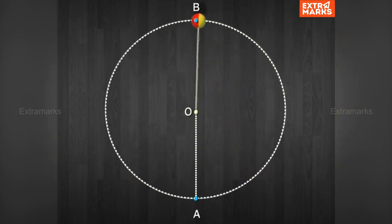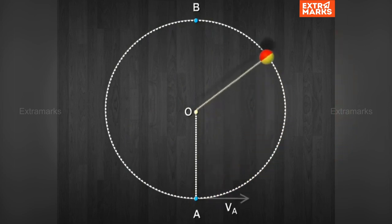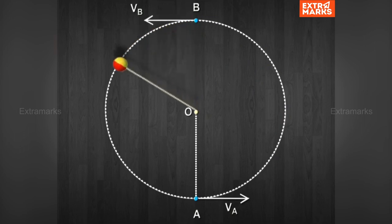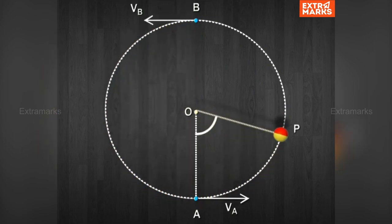To understand this motion, let us assume the velocity of the object at lowest point A to be V_A, and the velocity at the highest point B to be V_B. At a particular point P, its angular displacement is theta, and let the velocity at this point be V.